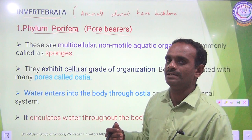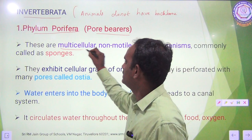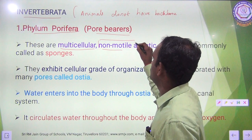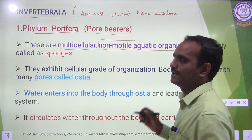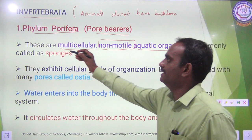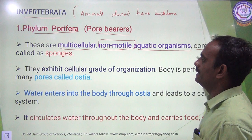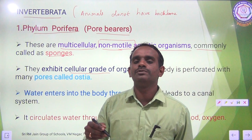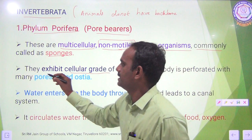In Invertebrates, the first one is Phylum Porifera. These are multicellular — meaning the organisms have many cells. Non-motile means they cannot move from one place to another. They are aquatic organisms, living only in water — commonly called sponges. They exhibit cellular grade of organization, meaning there is no tissue, no organs, and no organ system — only cells.